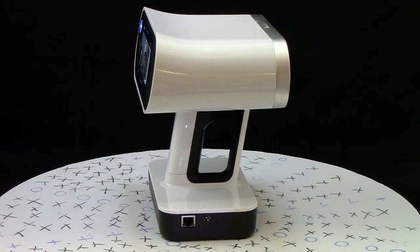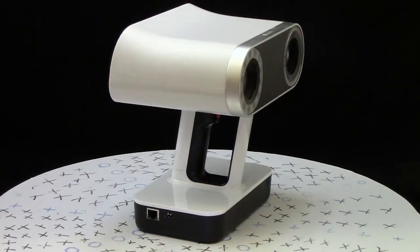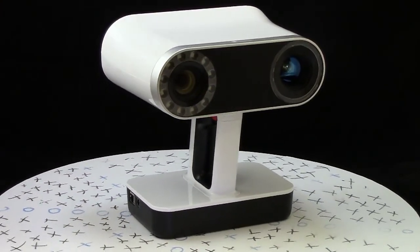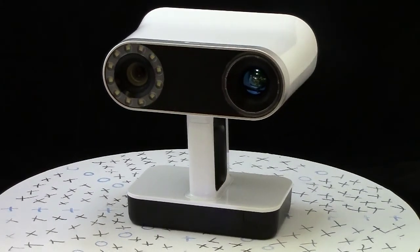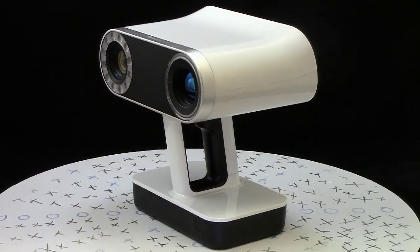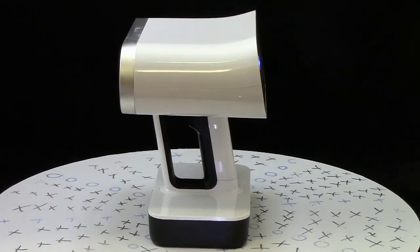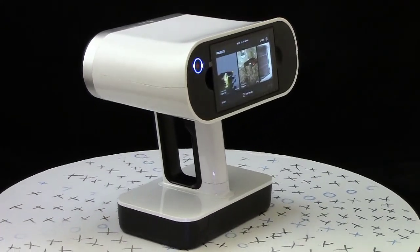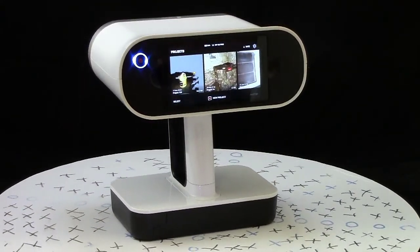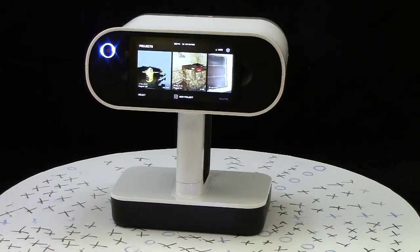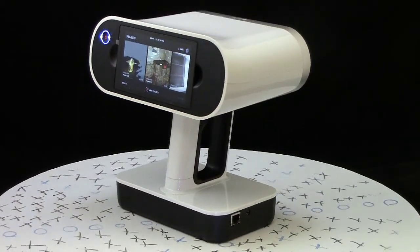The Artec Leo is great for capturing larger objects and sweeping over larger areas. It provides up to 0.2 mm of resolution and 0.1 mm of 3D point accuracy. It features a built-in HD touch panel screen, which shows real-time scanning and allows the user to change settings or rotate around the object.